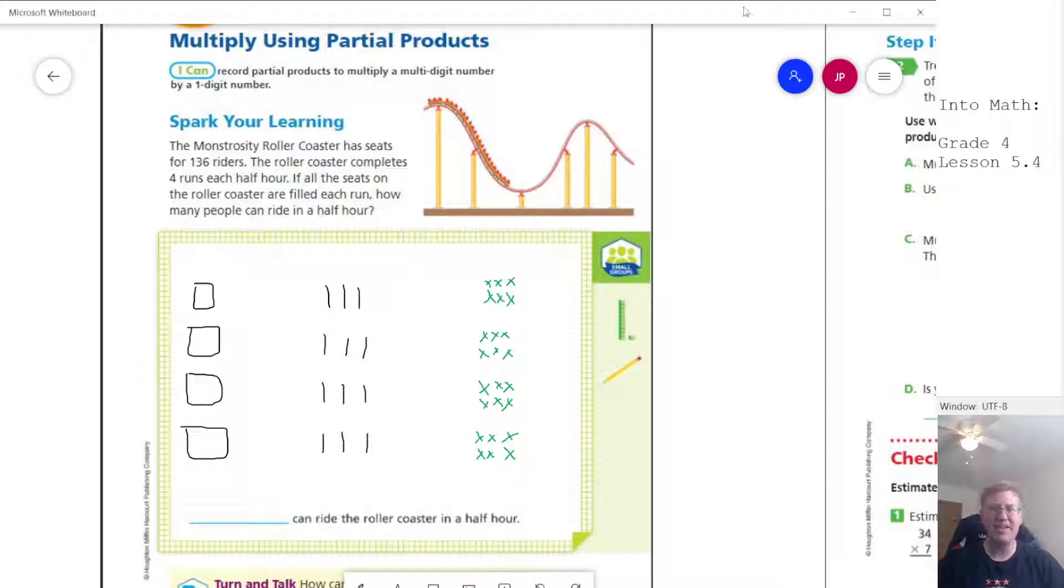So one of the things that they ask students to do nowadays is to use partial products. For our Spark Your Learning problem, I've gone ahead and drawn out a picture that will help us explain each step. We're working with 136 writers, so I've drawn a 100 block or a flat, 3 ten blocks, and 6 one blocks. This represents one group of writers. We can do four runs each half hour.